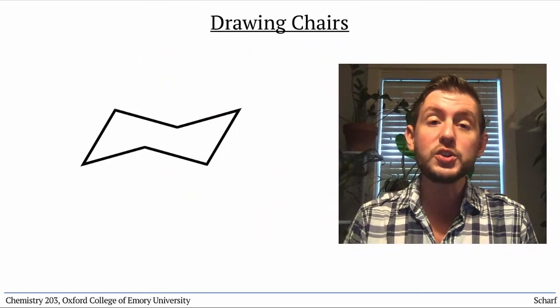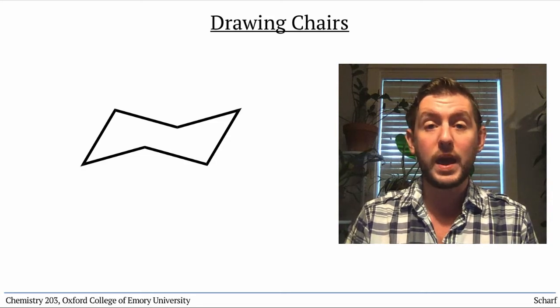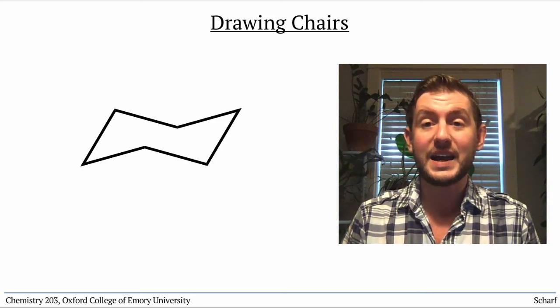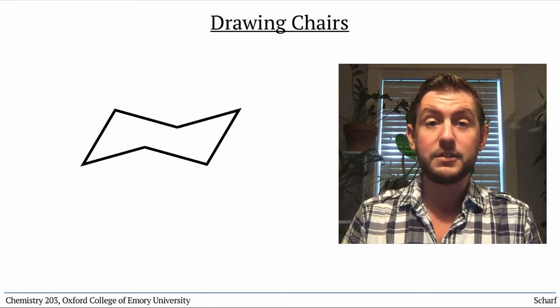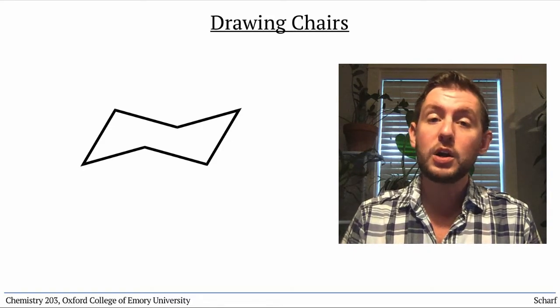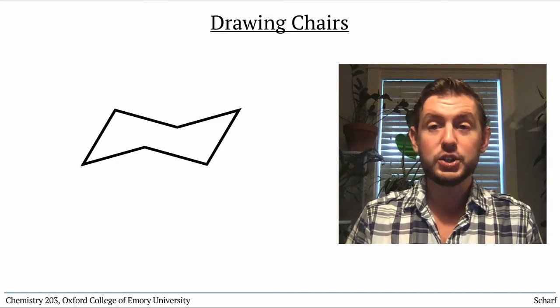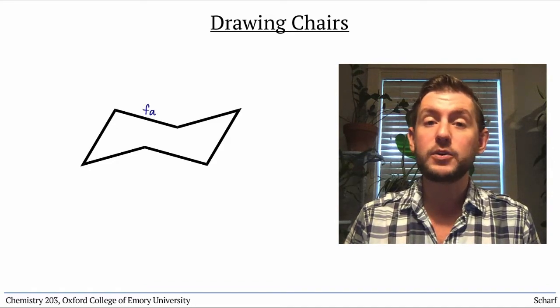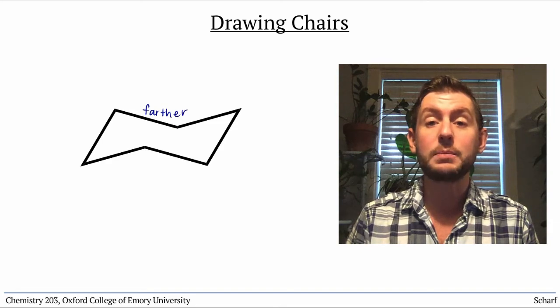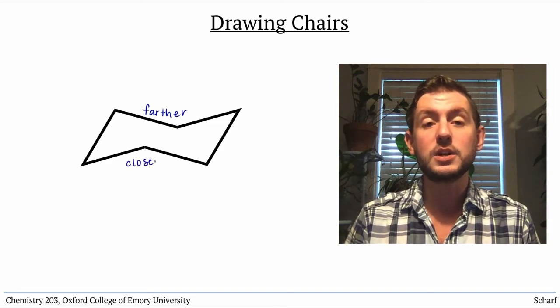We draw chairs in a very specific way, as if we're viewing it from the side, in a sort of perspective drawing. The carbons in the ring are shown in sort of a lightning bolt shape, with the carbons that are farther away being drawn on the top of the lightning bolt, and the nearer carbons below them.